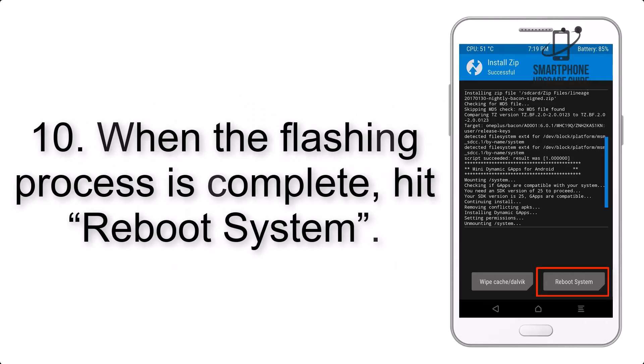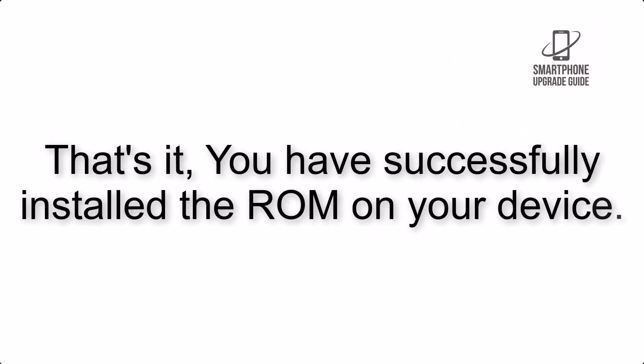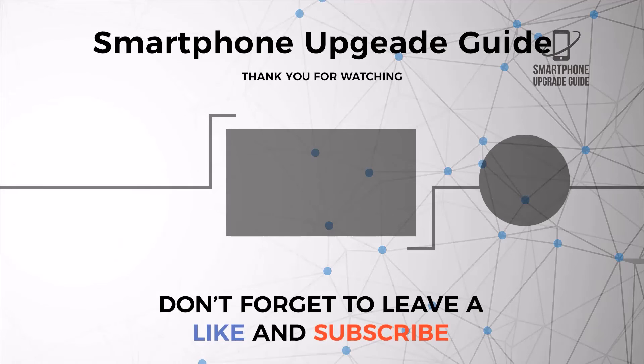Step 10: When the flashing process is complete, hit Reboot System. That's it — you have successfully installed the ROM on your device.